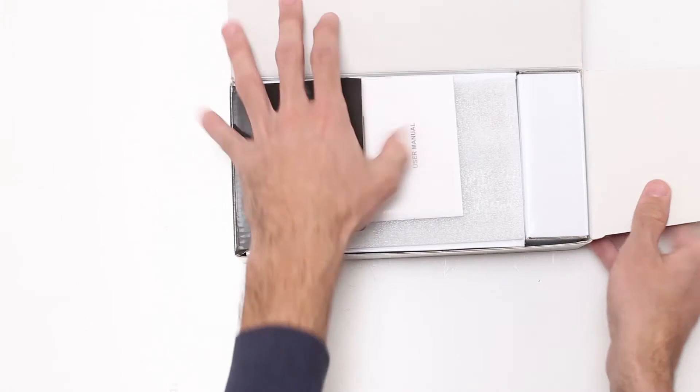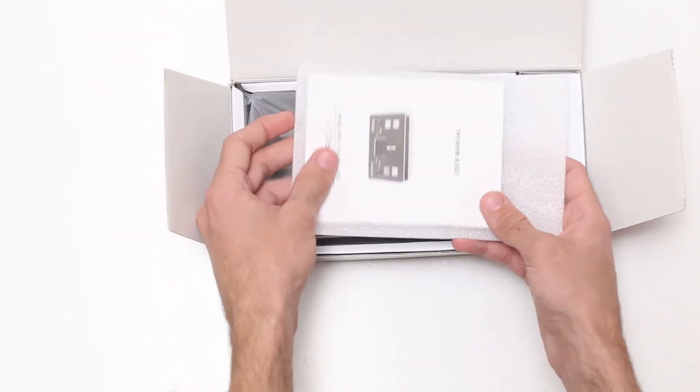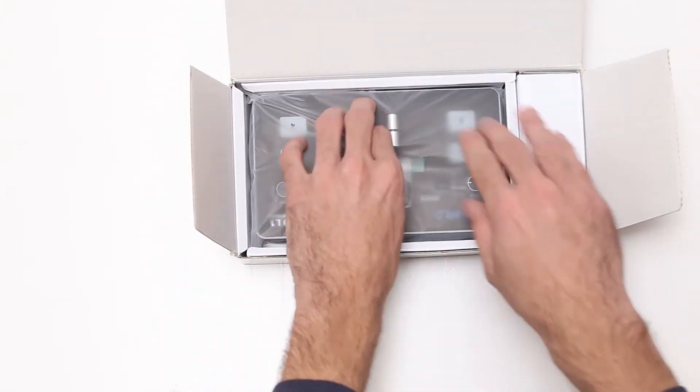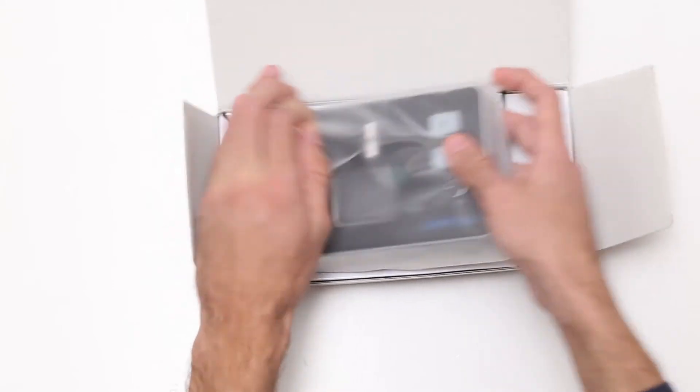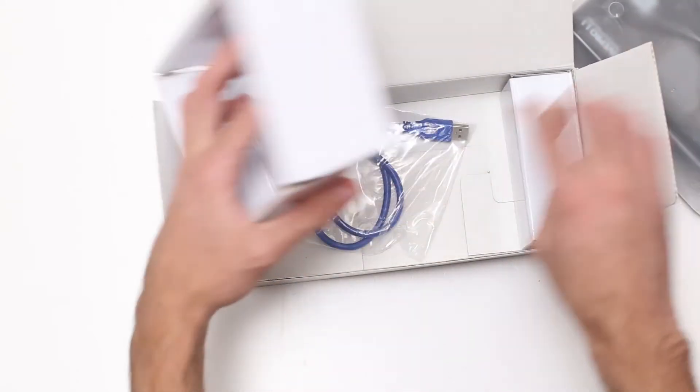When we open the box, on this side here we have the instruction manual and that's it. Here we have the actual mixer, and then beneath here we have a USB A to A cable.